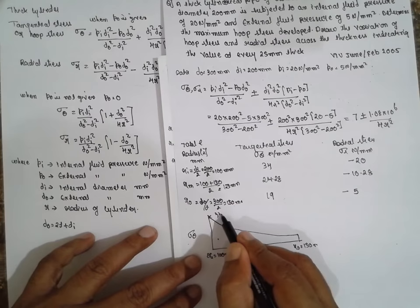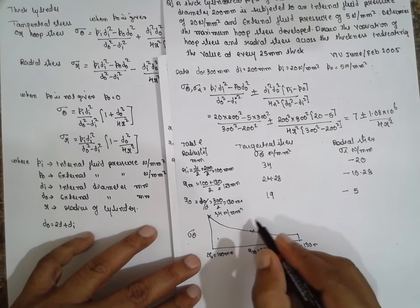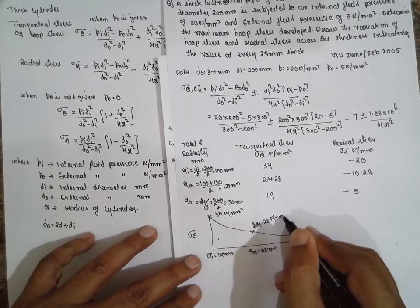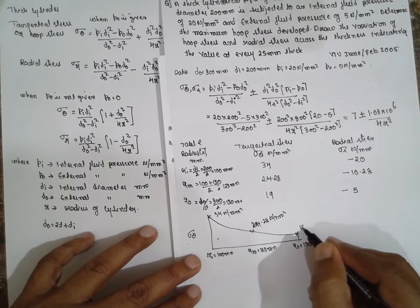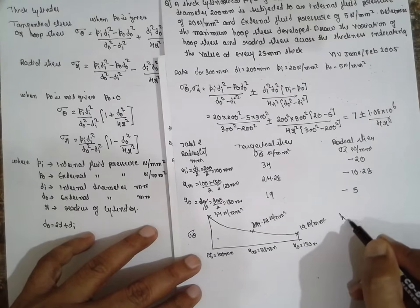Values will be 34 Newton per mm square, and this value at the middle 24.28 Newton per mm square, and the last 19 Newton per mm square. This is we call as hoop stress.